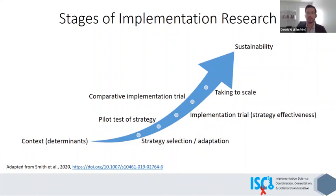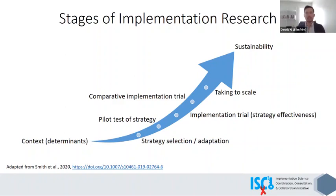This continuum of implementation research is adapted from an article by JD Smith et al. last year. We have seven stages going from pre-implementation contextual research — where you're looking at barriers and facilitators — to selecting or adapting implementation strategies, pilot testing those strategies, an implementation trial for strategy effectiveness, a comparative implementation trial where you're comparing two different strategies, taking it to scale for large public health impact, and then sustainability research.